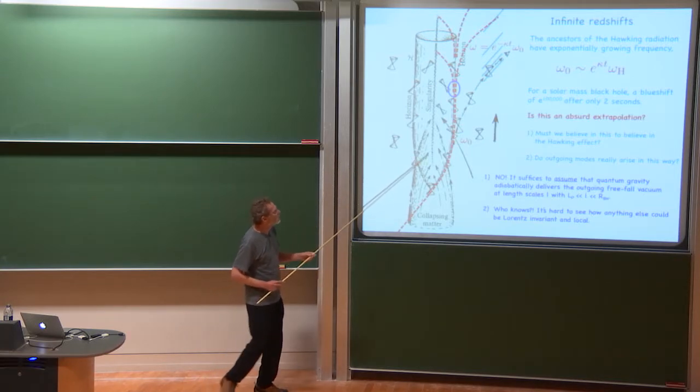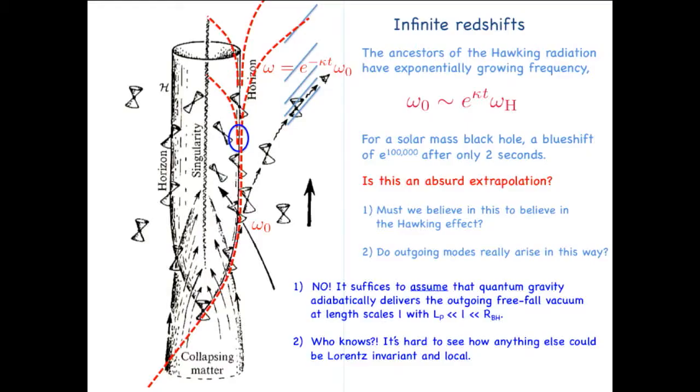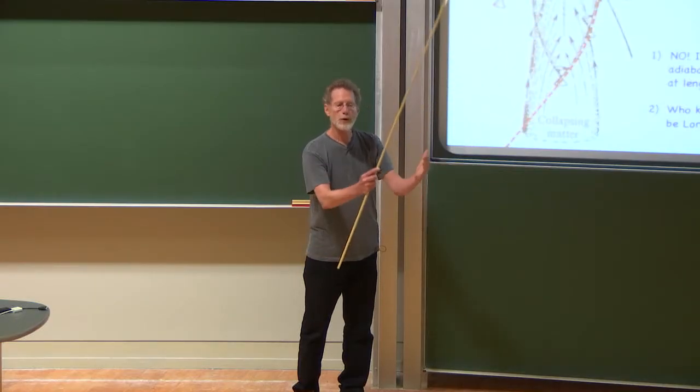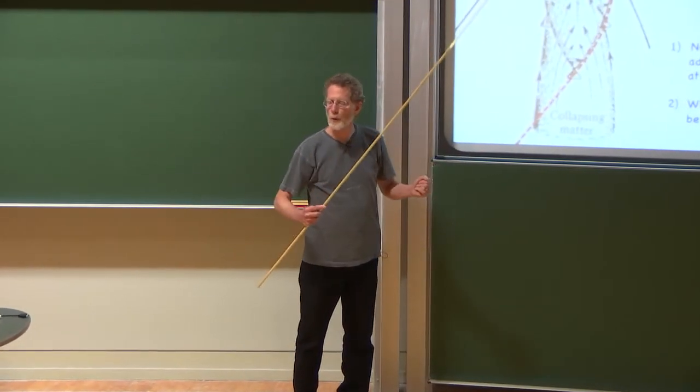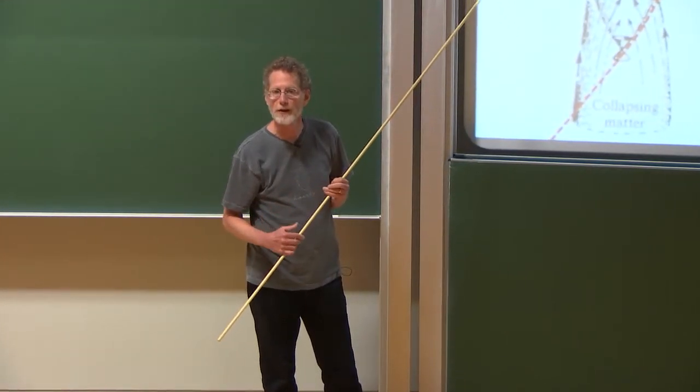The second question, do outgoing modes really arise this way? I would say, who knows? In fact, I find this an extremely puzzling aspect still. Because of Lorentz symmetry, you know, there's no preferred frame near the horizon locally. The black hole as a whole defines a preferred frame. So we could imagine logically that somehow the black hole spacetime non-locally produces the outgoing modes without ever passing through essentially infinitely blue-shifted progenitors.